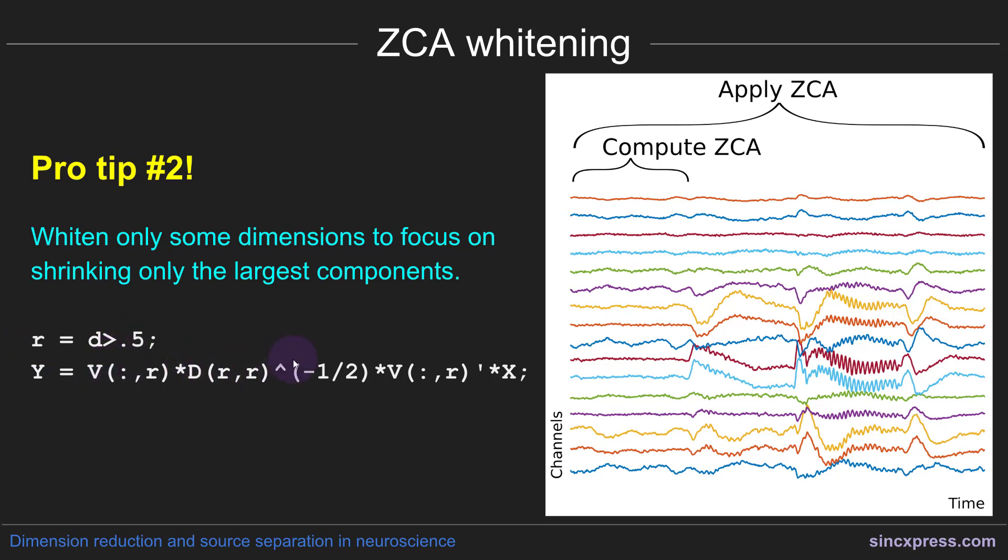Now notice this equation looks an awful lot like the one that I showed a few slides ago, except that I'm not using the entire V and D matrices. I'm only using the first R columns and the first R eigenvalues, like this. So this will make your whitening be even more selective to the largest features of the data.